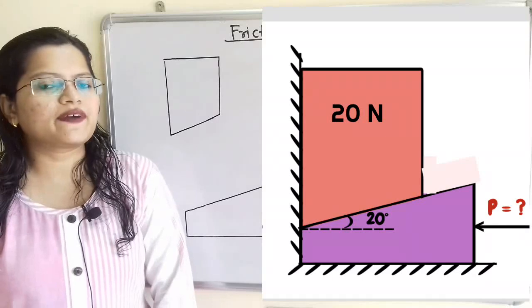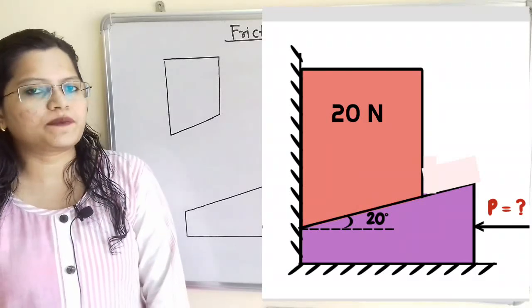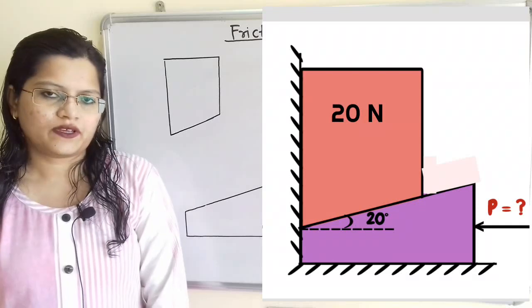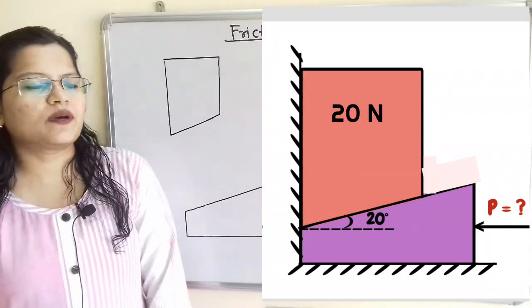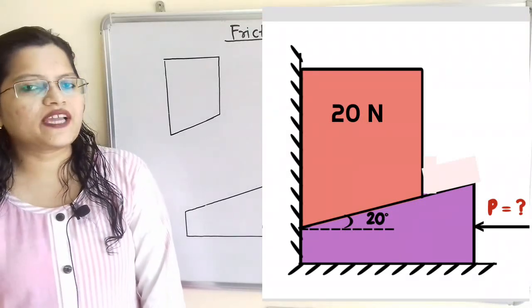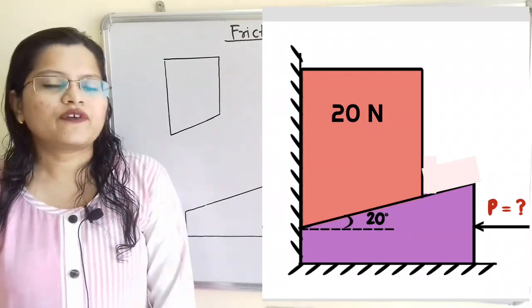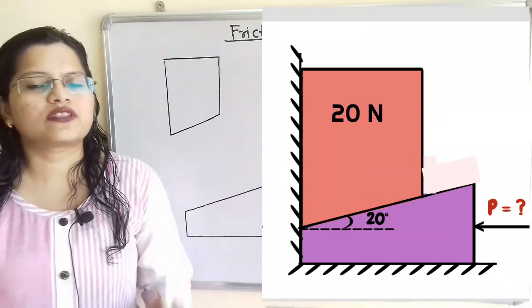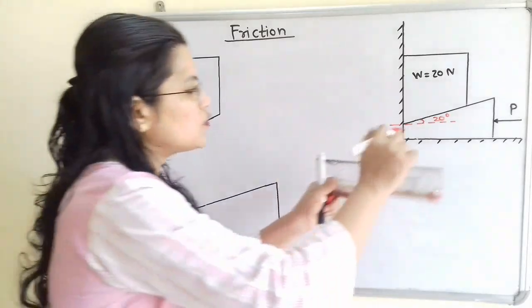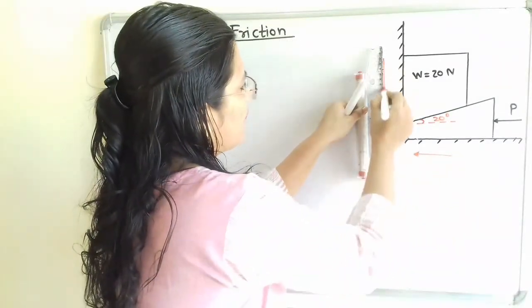Let us understand the given question with the help of a diagram. We have to find out the magnitude of applied force P so that the wedge will move in the direction of the applied force. The block with weight 20 N is placed over the wedge, and as the wedge moves in the direction of the applied force, this block will be slightly lifted. The motion of the wedge is towards the left-hand side and the motion of the block is in the upward direction.